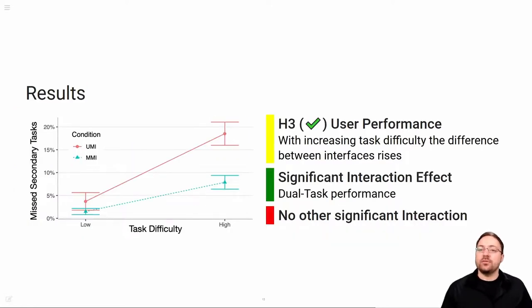Our third hypothesis states that the difference between both interfaces maximizes with increasing task difficulty. We found a significant interaction effect with regard to the dual task performance. If we look at the graph on the left here, the x-axis shows the low and high difficulty condition while the y-axis depicts missed secondary tasks in percent. We can clearly see that the difference in performance is significantly higher in the high difficulty condition than it is in the low difficulty condition. However, we found no significant interactions in all other measurements. Thus we only partially accept this hypothesis.